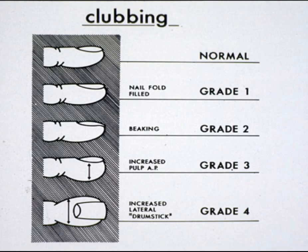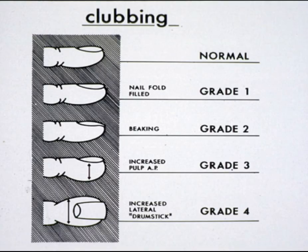Looking at the diagram: the first picture shows normal; grade one is nail fluctuation; grade two is beaking; grade three is increased pulp; and grade four is increased lateral size — the drumstick appearance. That's all about finger clubbing. If you like the video, please like, subscribe, and comment. Thank you.